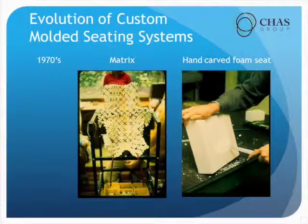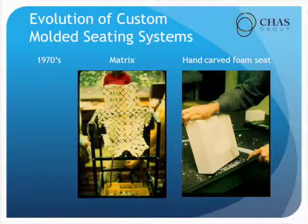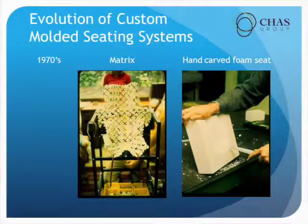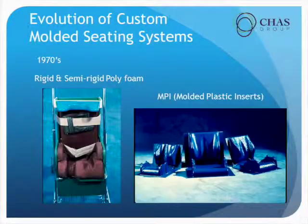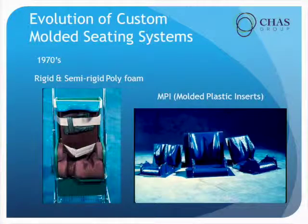Here's an early matrix system — I'm not sure if this was in the UK or Canada — but this was one of the very first prototypes of the matrix system they were developing in the orthotics and prosthetics industry. And then of course there's the old style hand carved foam. Here you have some pictures of early rigid and semi-rigid poly foams and molded plastic inserts — I don't actually remember the molded plastic inserts; some of this was a real learning experience for me.